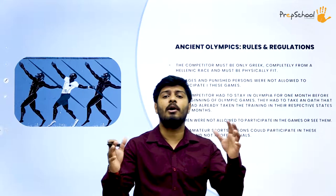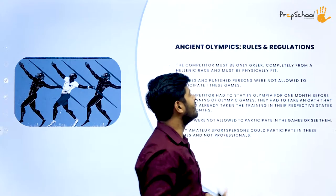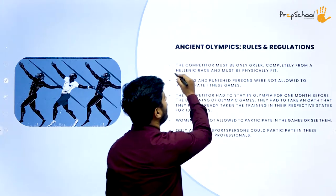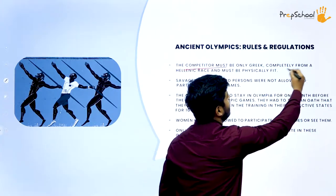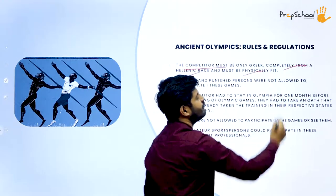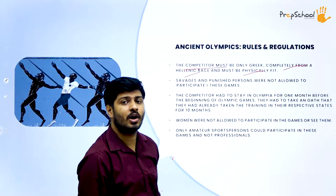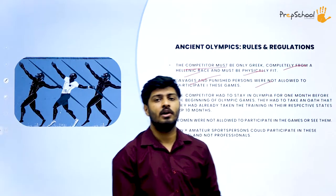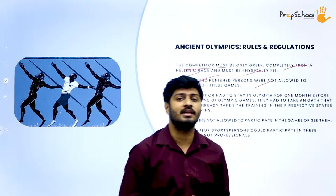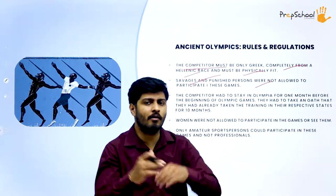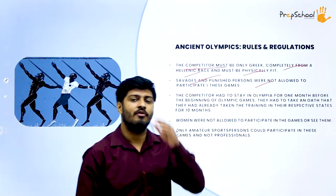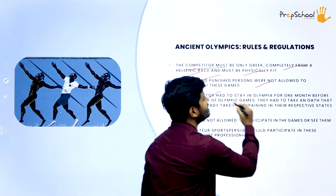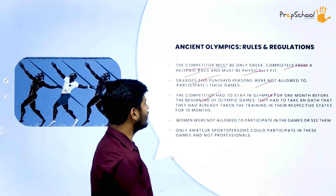Now let's look into some of the rules and regulations of ancient Olympics. First, the competitor must be only Greek, completely from a Hellenic race, and must be physically fit. The second rule was that savages and punished persons were not allowed to participate in these games. So all the prisoners and people who were savages were not allowed to participate.